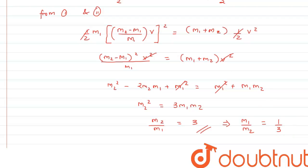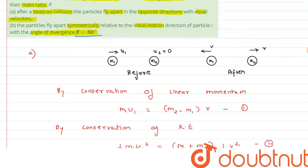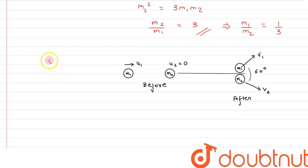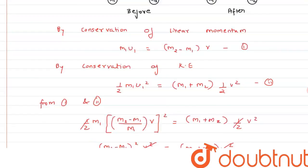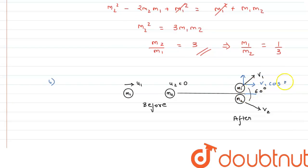Now for the second part: after collision the particles move with an angle of divergence of 60 degrees. Since the particles fly apart symmetrically, half the angle is 30 degrees. Resolving velocity v1 into components: horizontal component is v1*cos30 and vertical component is v1*sin30. Similarly, v2 has components v2*cos30 and v2*sin30.